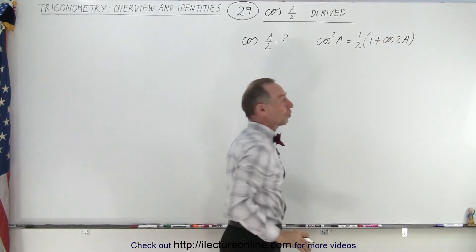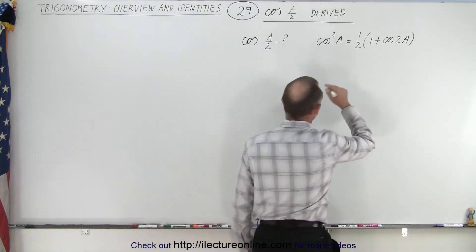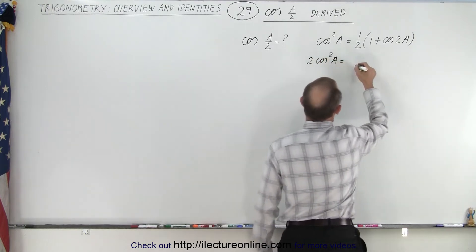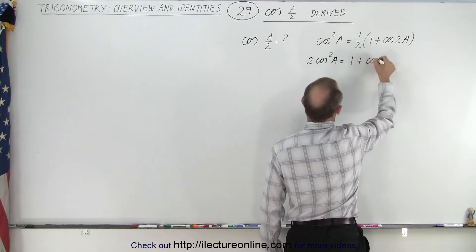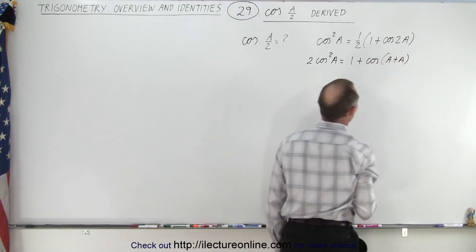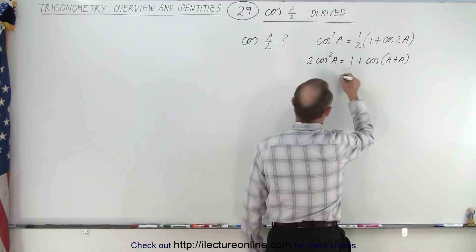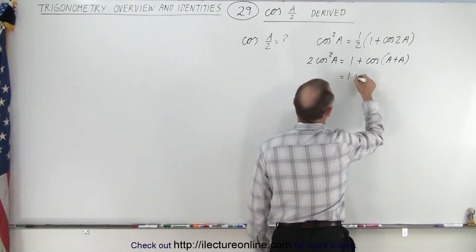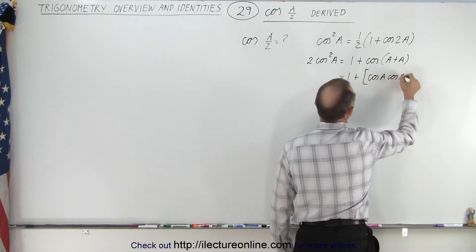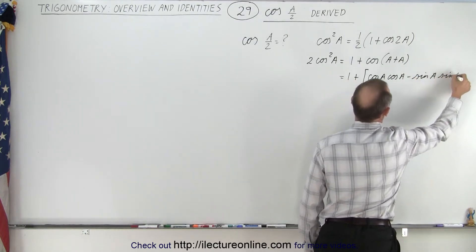First we're going to show that that's indeed the case, that it is accurate. So we're going to multiply both sides by two. We have two times the cosine square of A equals one plus the cosine of 2A, which can be written as A plus A. The cosine of the sum of two angles can be written as one plus the quantity cosine A times cosine A minus sine A times sine A.